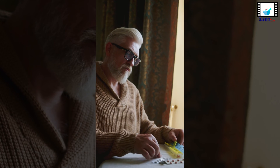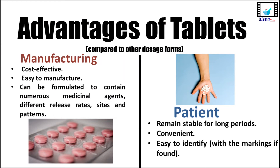If you think of the advantages through the different stages of the manufacturing of tablets, it becomes easy not just to memorize but to spot them. Starting from manufacturer to patient: first, tablets are inexpensive and easy-to-manufacture dosage forms. Regarding what goes into tablets, they offer great variety in the number and release rate of medicinal agents incorporated. After manufacturing, they remain stable for longer periods than other dosage forms, and they are more convenient to handle and easier to identify by patients.